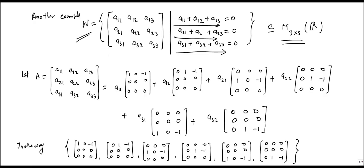So we can write this first condition as a13 = -a11 - a12. Similarly, a23 = -a21 - a22, and a33 = -a31 - a32.